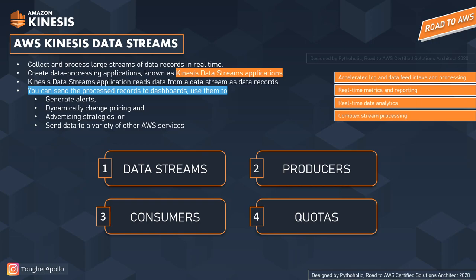Next is producers — a producer is an entity that puts data records into Kinesis Data Streams. Then we have consumers: if you have a producer to push data into KDS, you will obviously have a consumer that processes that data. Consumers are known as Amazon Kinesis Data Streams applications — whenever I speak about a consumer, think of a Kinesis Data Streams application, and vice versa.